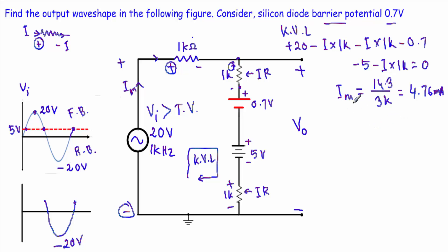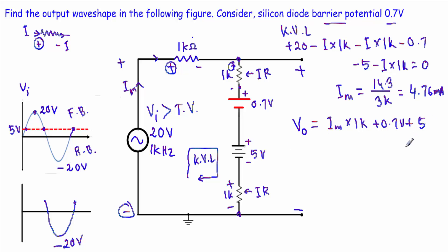Now let me calculate the output voltage when the input voltage is at its maximum value of 20 volt. The output is taken between two terminals, so I consider all elements connected between those points: the 1 kΩ resistor with drop IM times 1k, plus the 0.7 volt barrier potential, plus the 5 volt bias, plus another IR drop of IM times 1 kΩ. This gives a maximum output voltage of 15.2 volt.